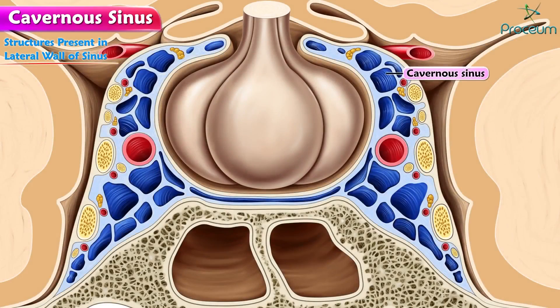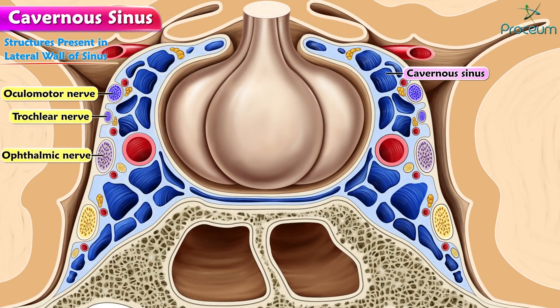The structures present in the lateral wall of the sinus from above downward are the oculomotor nerve, the trochlear nerve, the ophthalmic nerve, and the maxillary nerve.